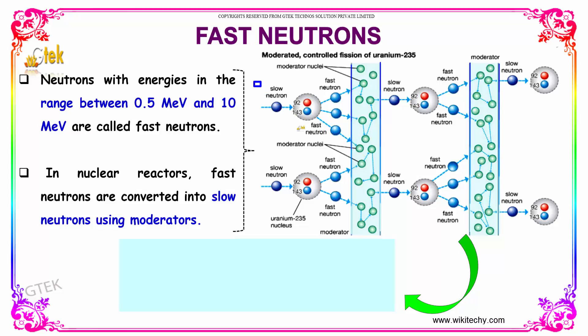You can see the slow neutrons here and the fast neutrons here. During fission, it will become a fast neutron.